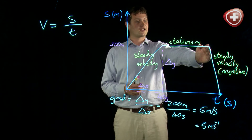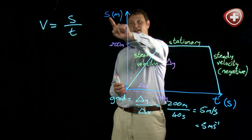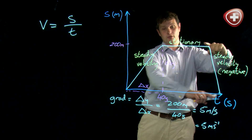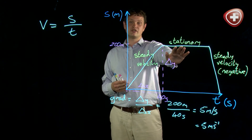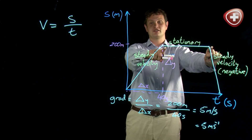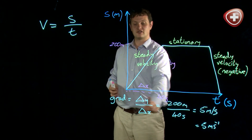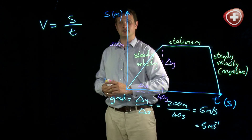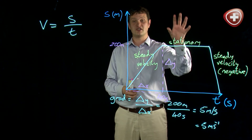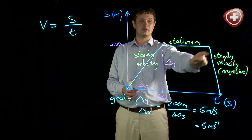We could do the same to work out our gradient in the return section and thus get our velocity there — but clearly, our displacement there is going to be negative 200. And for the stationary section, our change in displacement is 0, so the gradient there would be 0, giving us a velocity of 0 meters per second. This ties up exactly with our idea that this section is where we're stationary.